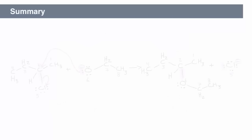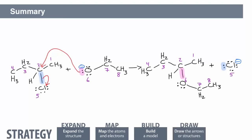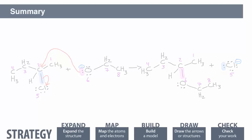In summary, every time you need to add electron-pushing arrows to depict a reaction mechanism, start by expanding the structures, map the atoms and electrons, use a model if necessary, and then draw the arrows to show all the bonds that break and form in that step of the reaction. Remember to review your work, check that you have the correct answer, and reflect on what you learned.